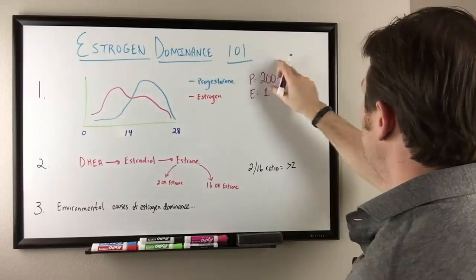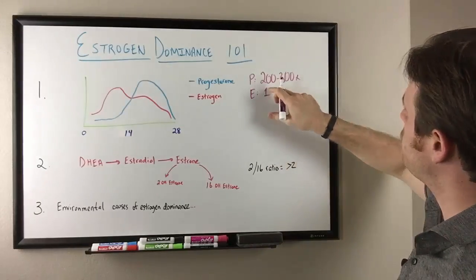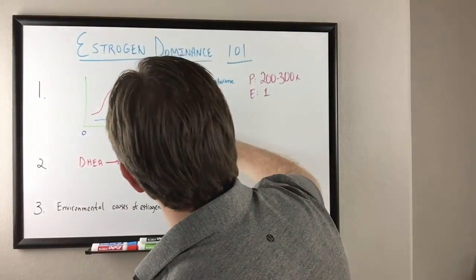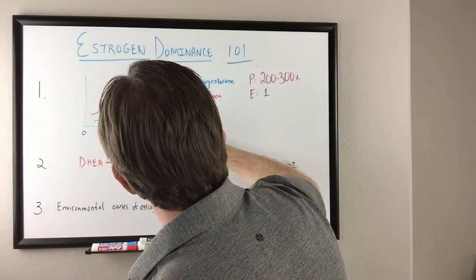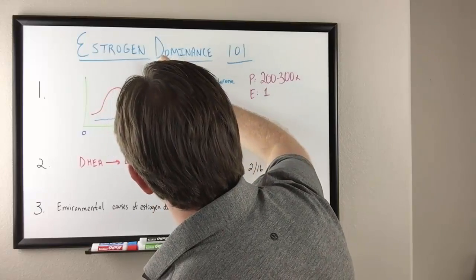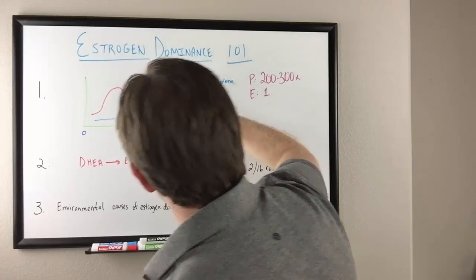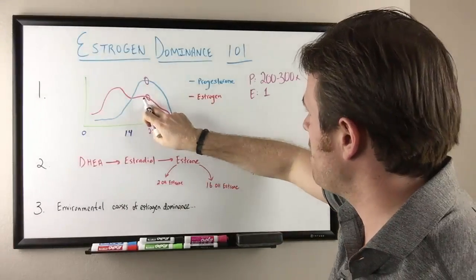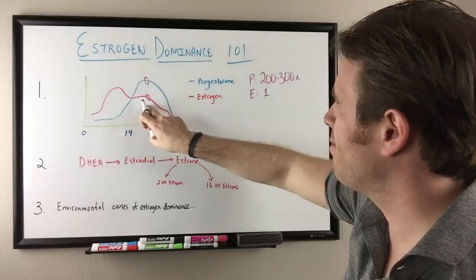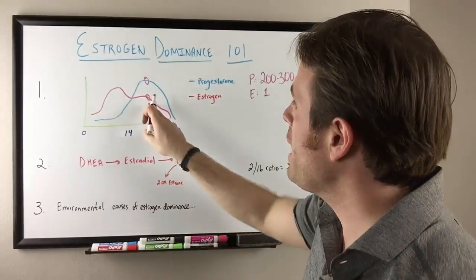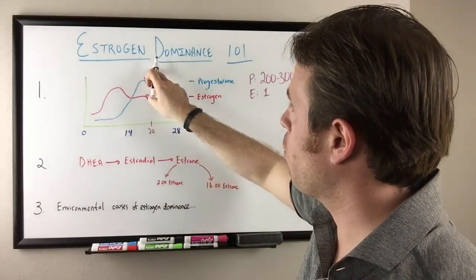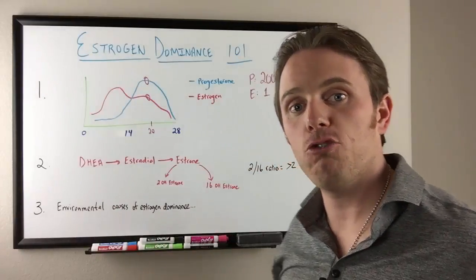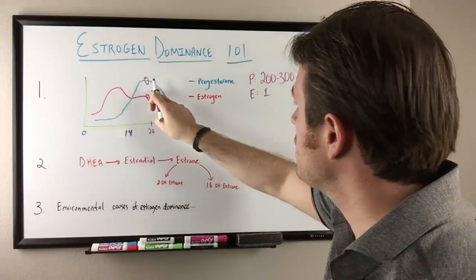Typically we see this 200 to 300 ratio right around day 20 of our female cycle. So right here is where we typically see this ratio intact, right in this area. Now right around here we could be making about 200 micrograms of estrogen while we're making 20 to 25 milligrams of progesterone. That 200 to 300 times ratio here.